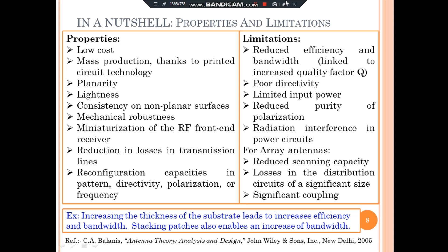At the same time, Microstrip Antennas have some disadvantages, which include reduced efficiency and bandwidth linked to an increased quality factor, poor directivity of about 6 to 8 dB, limited input power, reduced purity of polarization, and radiation interference in power circuits. However, variations in design or geometry enable a sensible improvement in performance. For example, increasing the thickness of the substrate leads to increased efficiency as well as bandwidth.